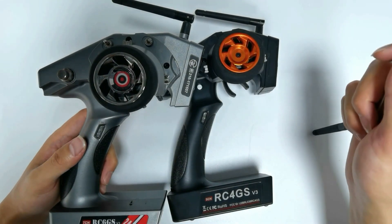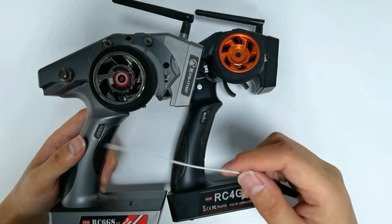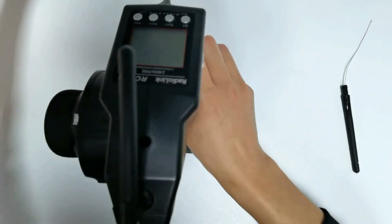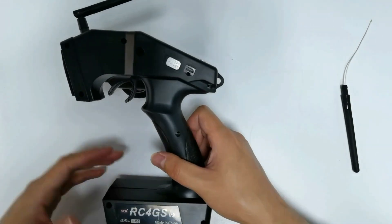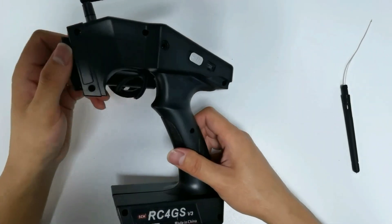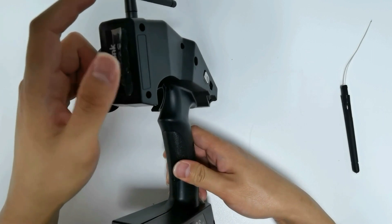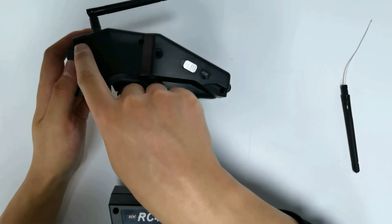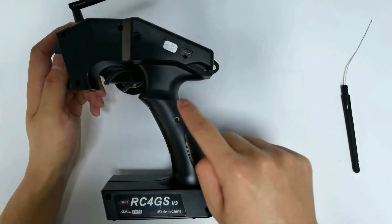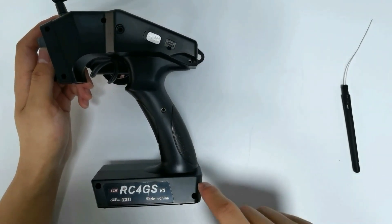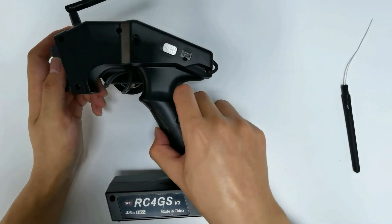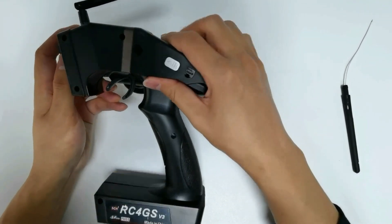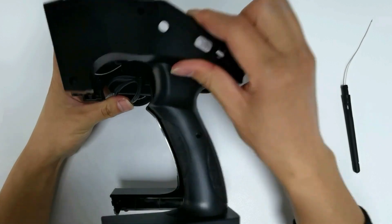You can follow this tutorial on how to replace the antenna. We will take RC4GS V3 as an example. Tear off the decorative sheet on one side and loosen all the screws on one side of the cover. Remove the cover.